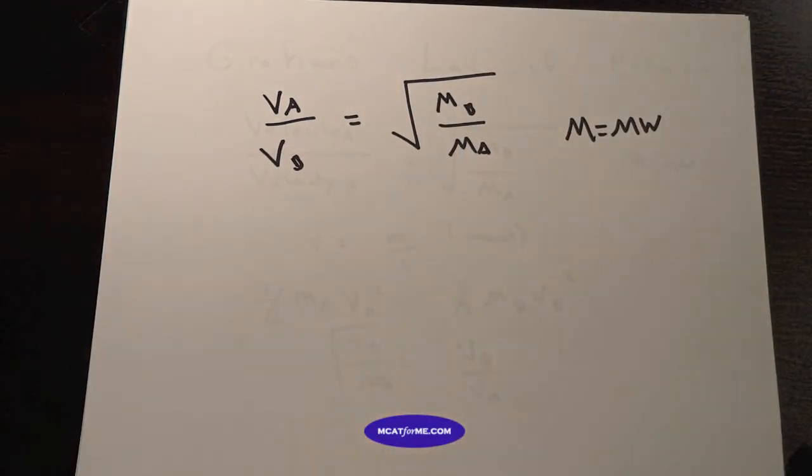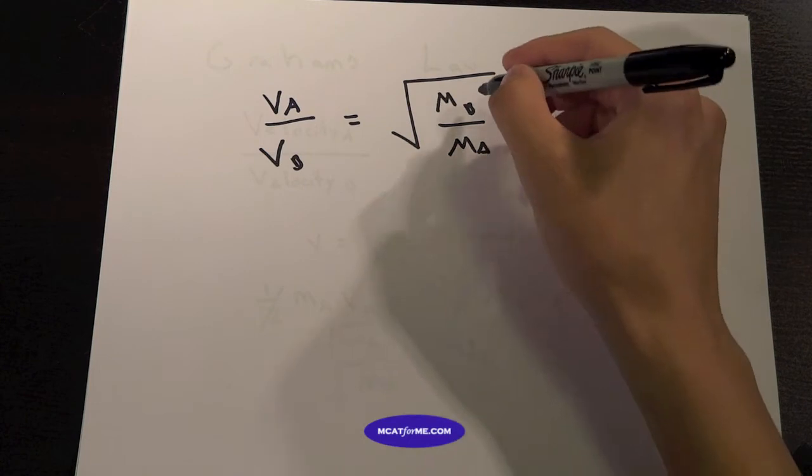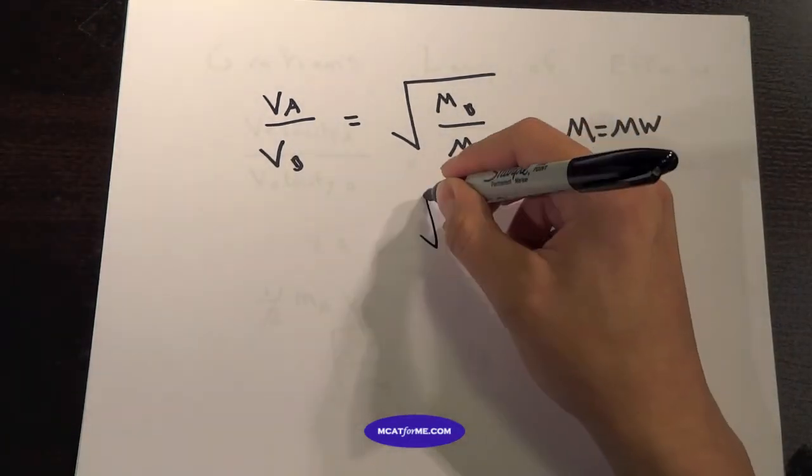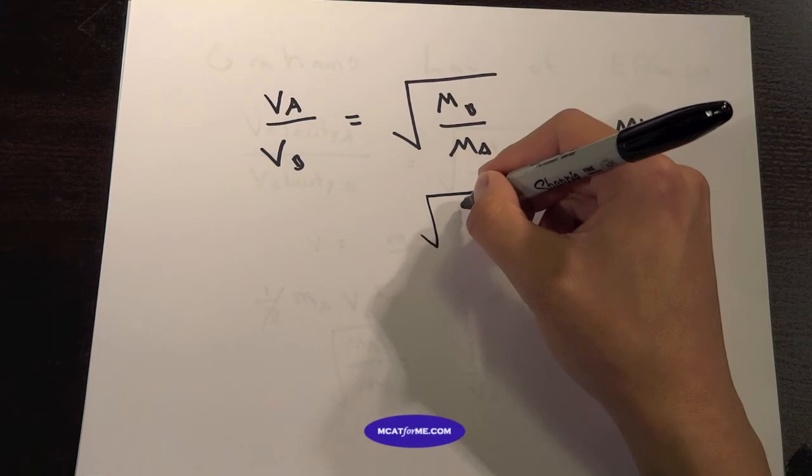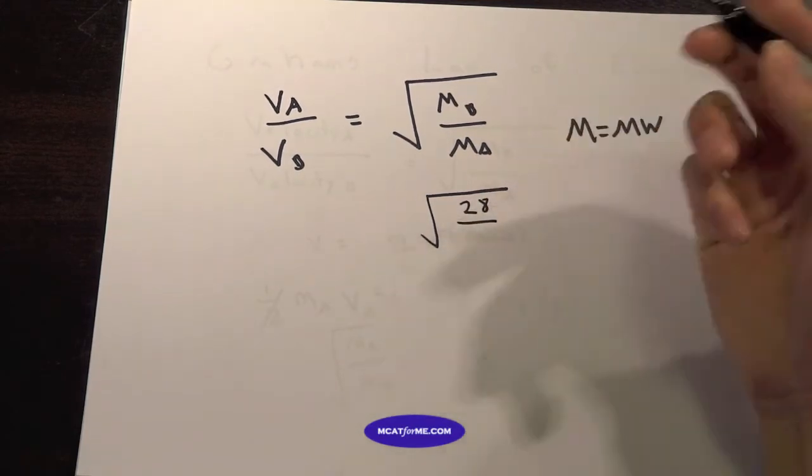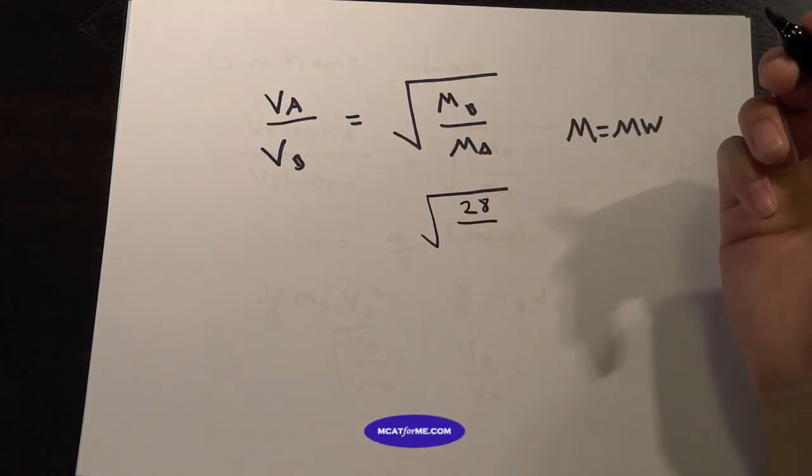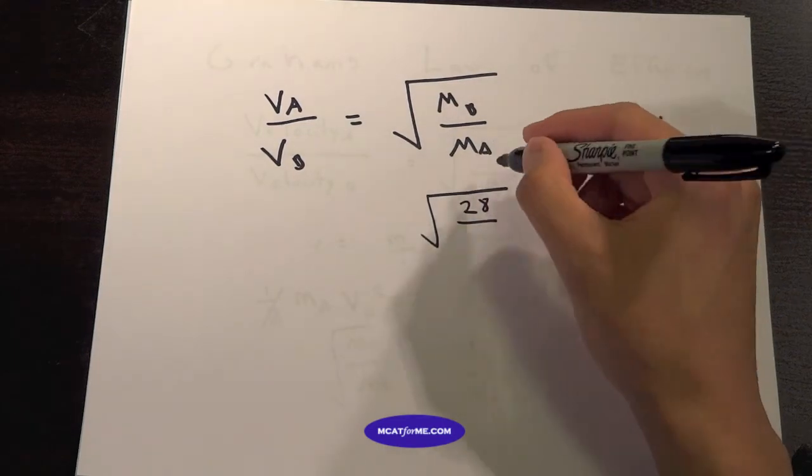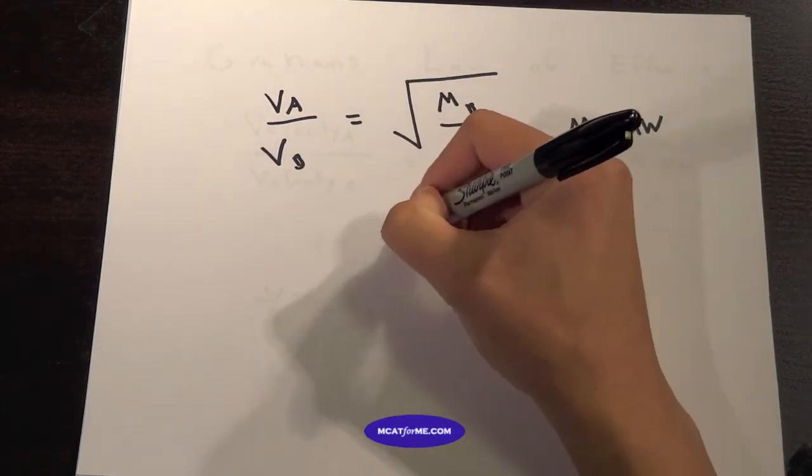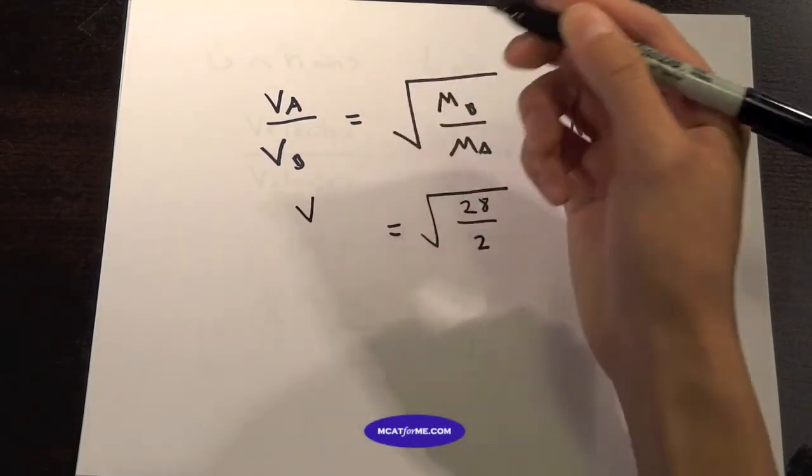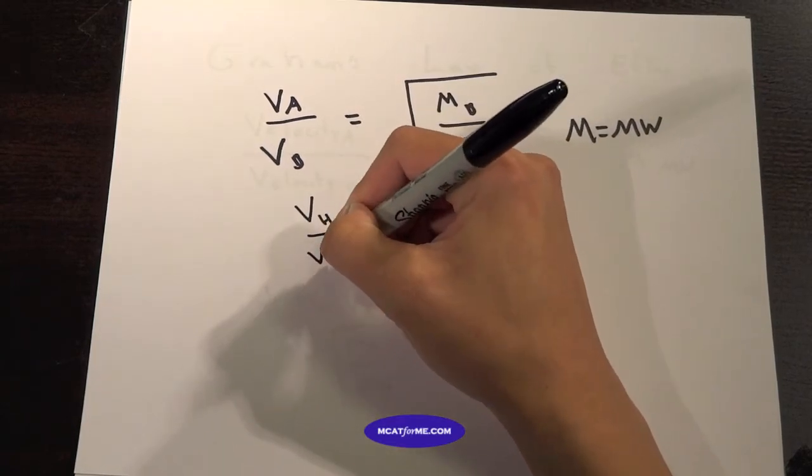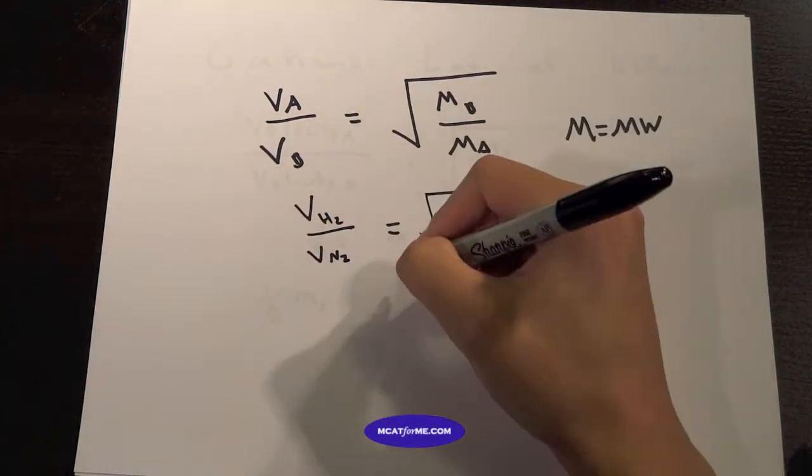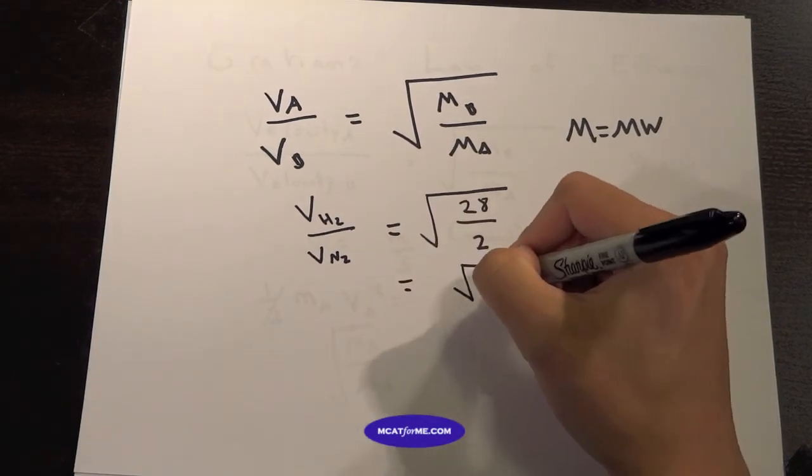If we look at the question again, it's the ratio between hydrogen and nitrogen. Let's say MB will be nitrogen, so the molecular weight of nitrogen is 28 because one nitrogen has 14 amu. And for hydrogen it will be 2. We said A was hydrogen over B which was nitrogen.